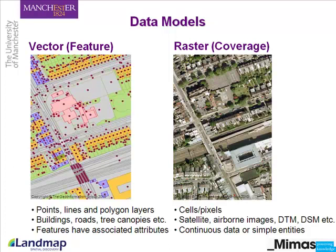Moving on to data models, these really underpin spatial data. There are two different kinds. First is vector data, sometimes known as feature data, which represents points, lines, and polygons in space. Examples include buildings, roads, and tree canopies. With a vector or feature, you have associated attributes — for example, a tree feature may have attributes of height, type of tree, and age. These are all examples of attributes associated to that particular feature.